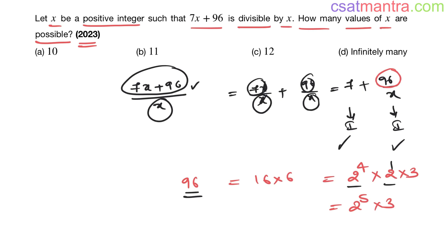2 power 5 into 3 is how you write 96 as a product of primes in a unique way. I have added the powers: 4 plus 1 equals 5. So this is in the form of p1 power a times p2 power b, where p1 and p2 are primes. Here a is 5, b is 1. The formula for number of factors is 1 plus a times 1 plus b times 1 plus c and so on.